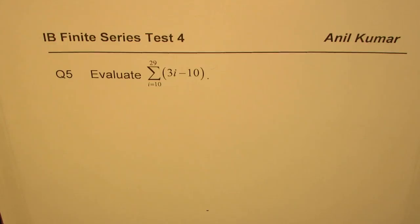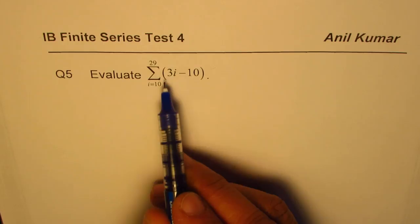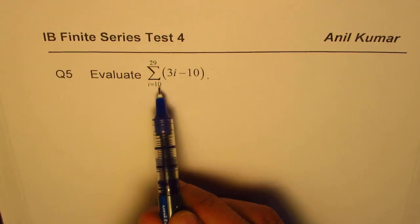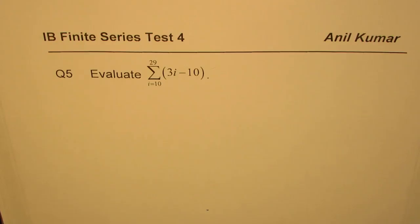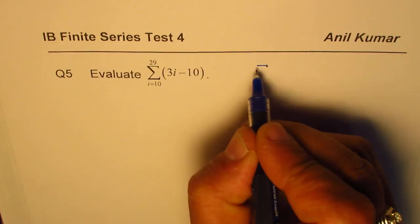I'm Anil Kumar sharing with you a question from IB test paper on finite series. Question number five: evaluate sum of 3i minus 10 when the lower limit is 10 and the upper bound is 29. You can pause the video and answer the question now. To find this sum of series we might use this formula.